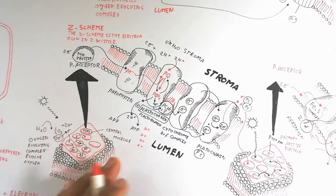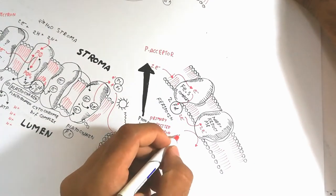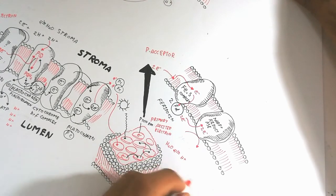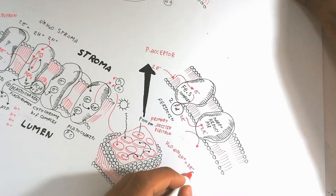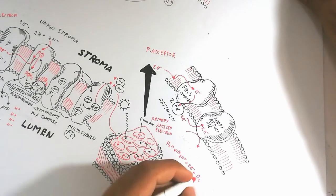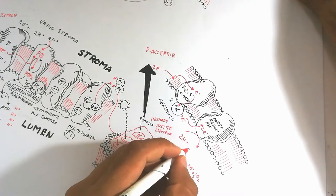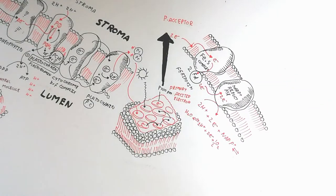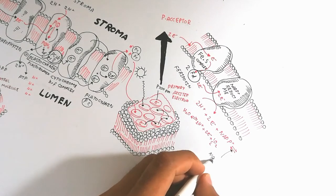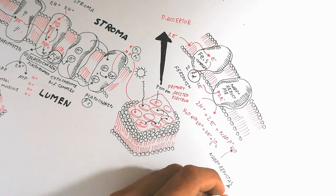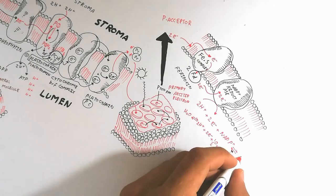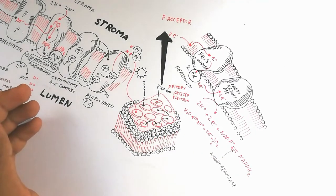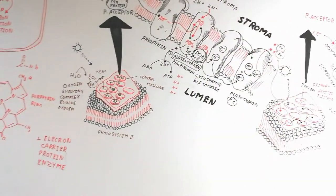Protons accumulate in the lumen from water splitting. Note that water splitting is also partially associated with Photosystem 1. Two protons and two electrons are responsible for converting NADP+ into NADPH2. The NADP+ reductase enzyme carries out this reduction after ferredoxin transfers electrons to the NADP+ reductase protein complex.